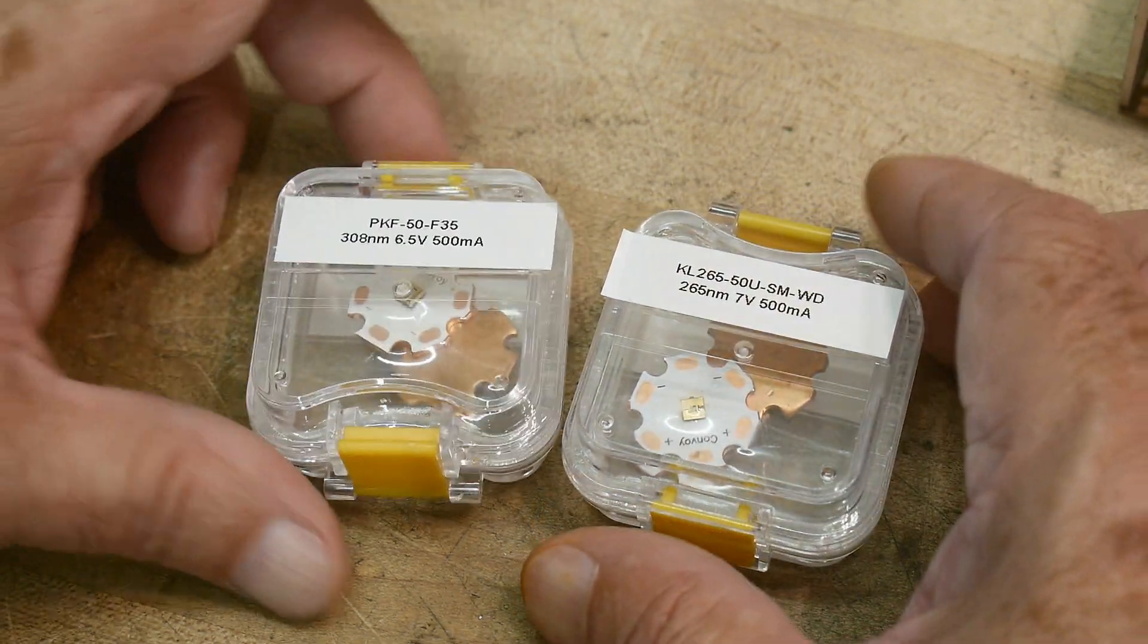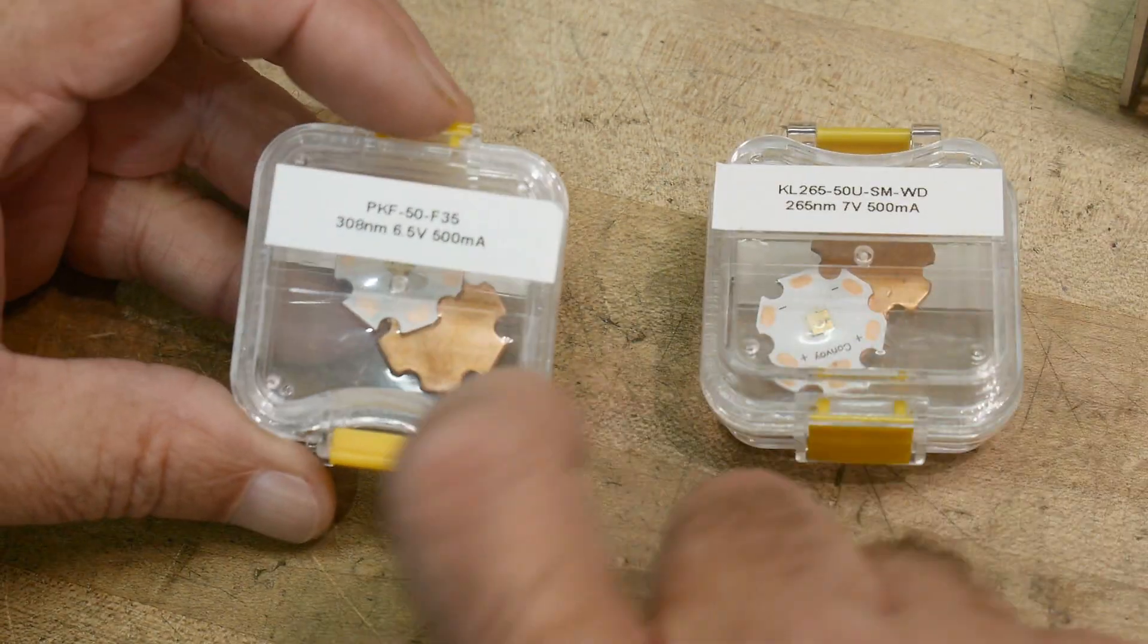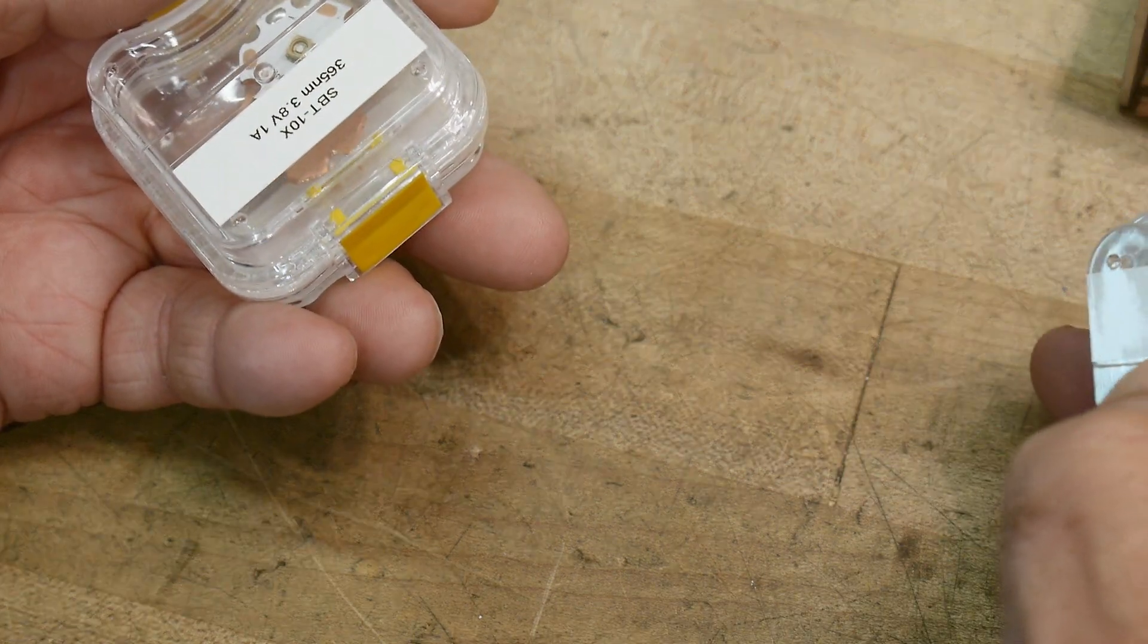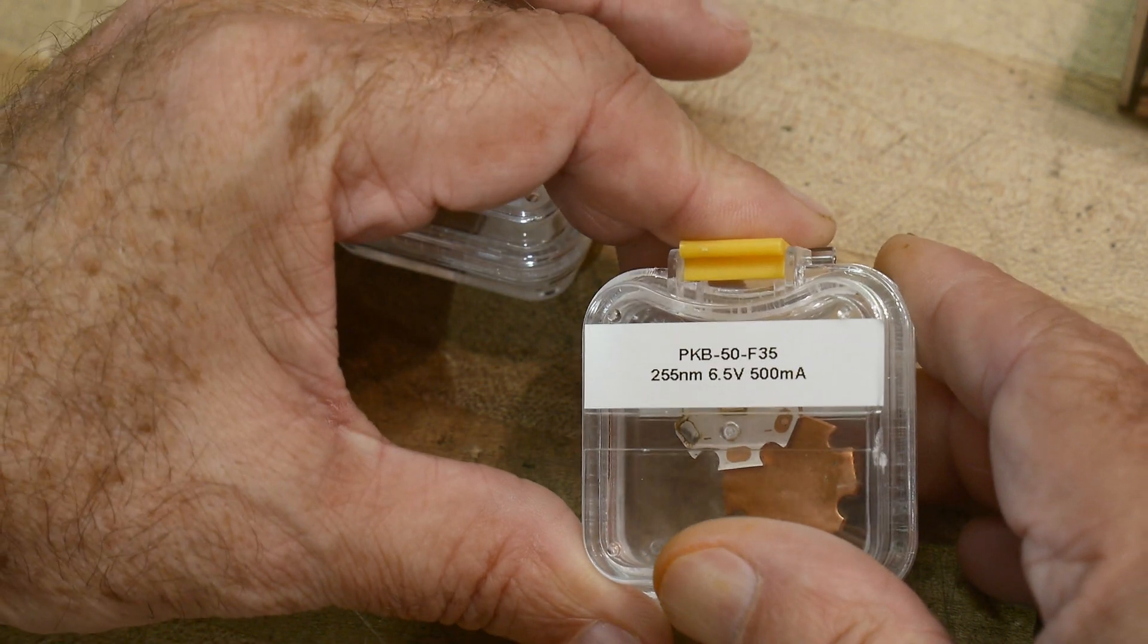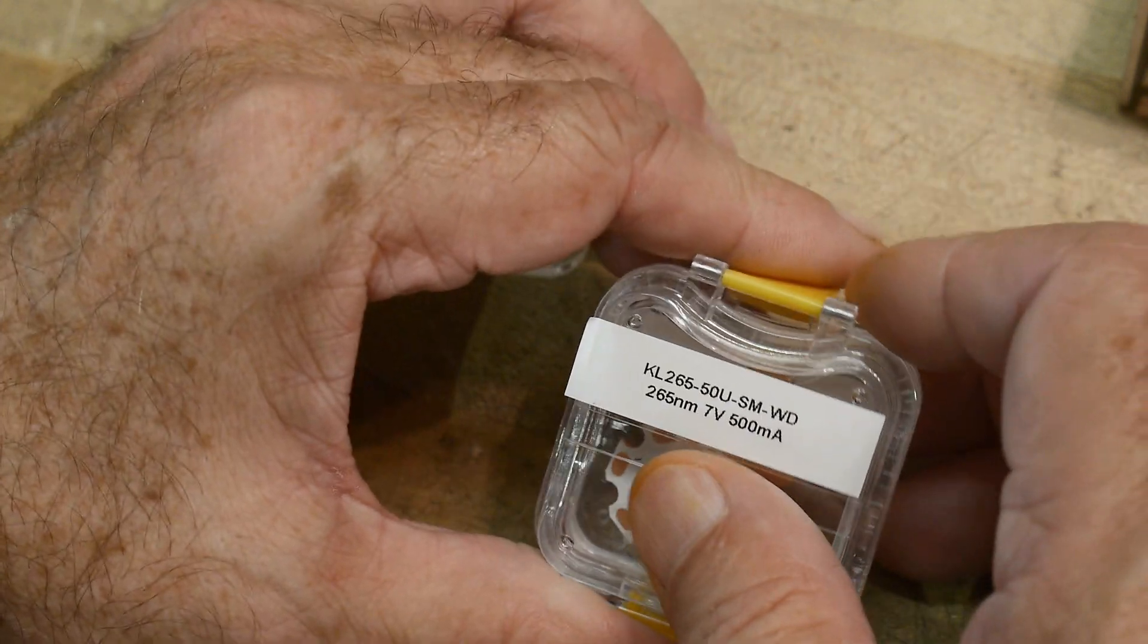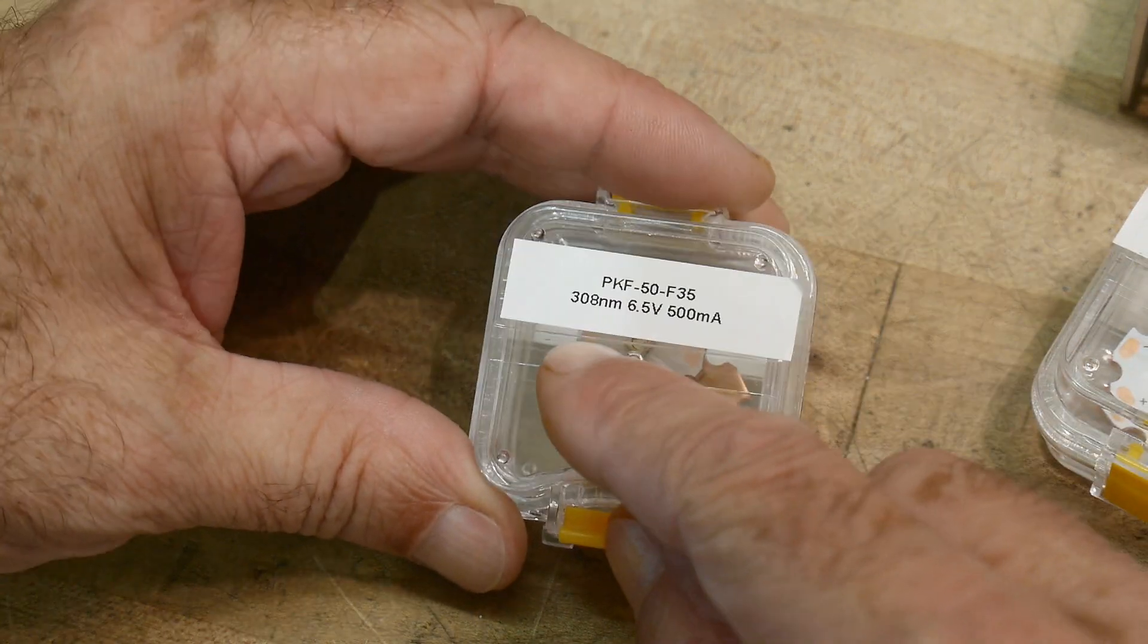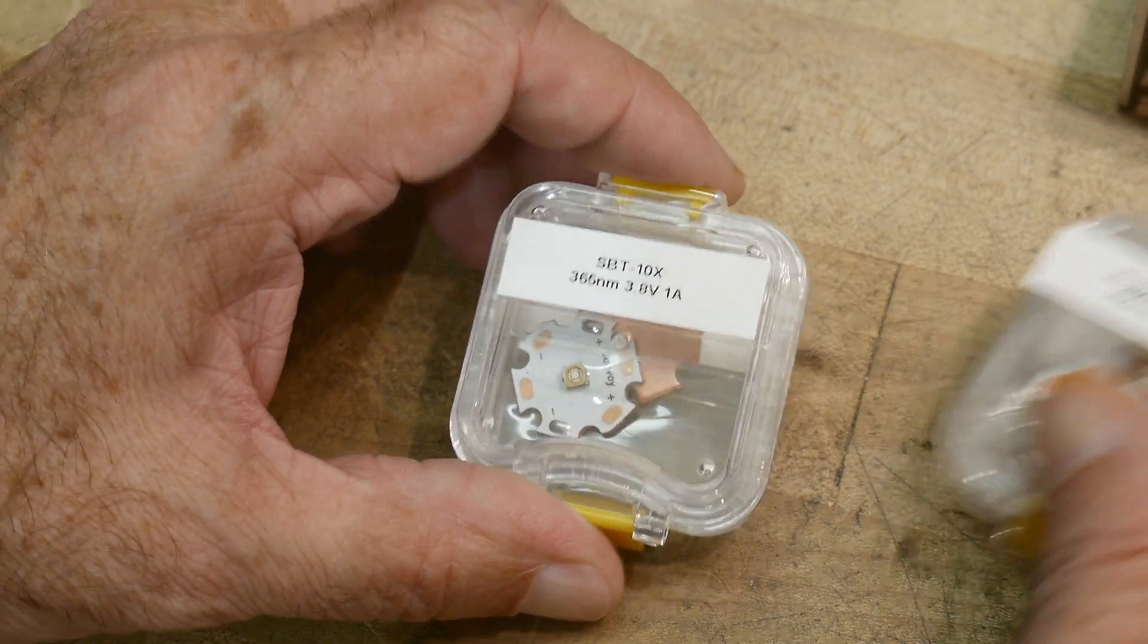These are UV LEDs, ultraviolet LEDs, and they're different varieties. Let's see here, the shortest one is 255 nanometers, and then it goes to 265 nanometers, and then 308 nanometers, and 365 nanometers.